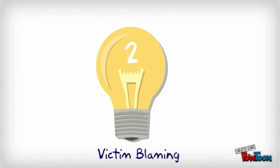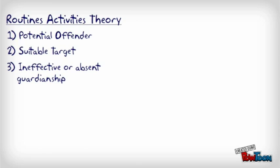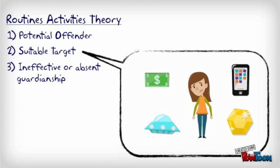Another criticism that RAT has is its tendency to blame victims. This is especially so in the case of rape. In the case of rape, suitable targets are often individuals who are valuable, accessible and are able to be moved. Therefore, this implies that in order to avoid rape, the victim has to change her lifestyle.